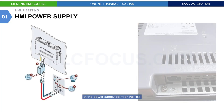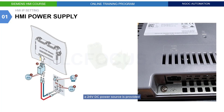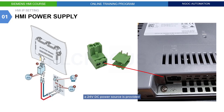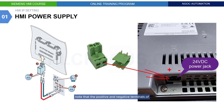At the power supply point of the HMI, a 24 VDC power source is provided. Note that the positive and negative terminals of the power source must be connected correctly according to the labels displayed on the HMI.